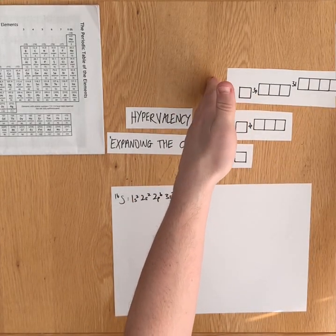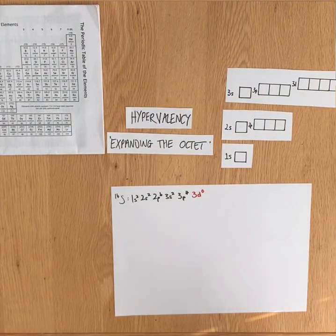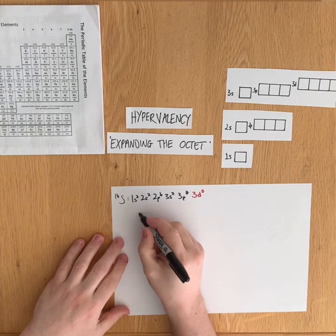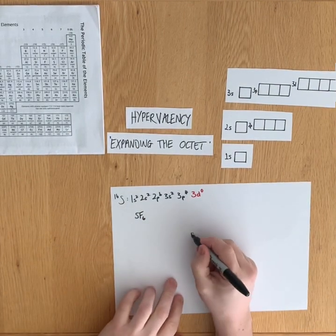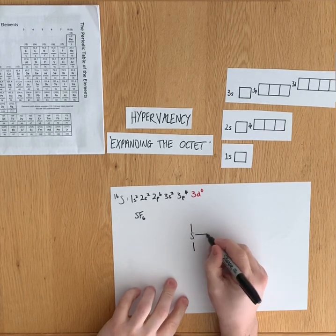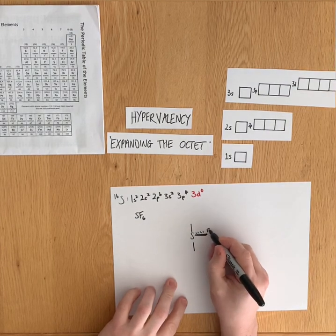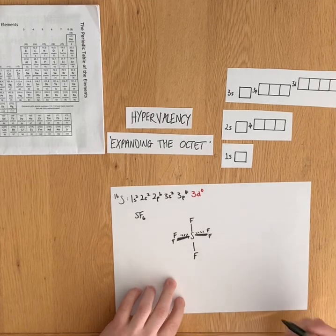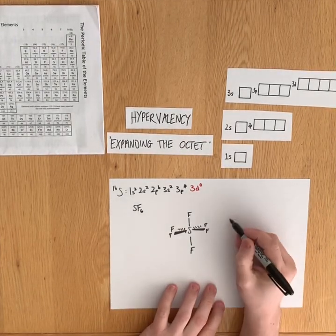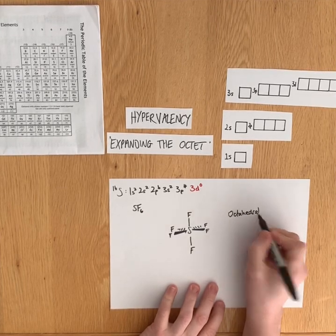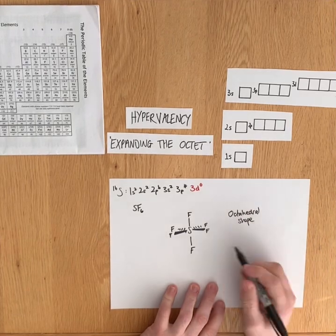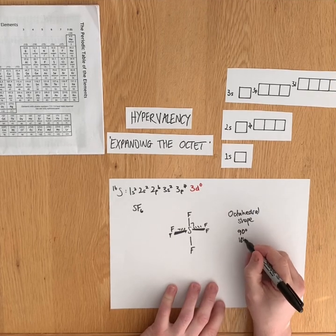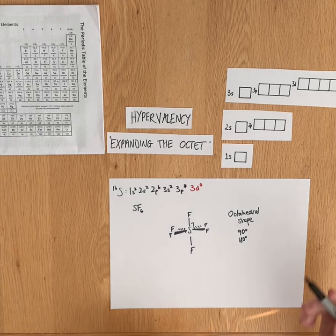SF₆ is the standard hypervalent compound that A-level sort of looks at with sulfur. Sulfur will share one of its electrons to get one back with six different fluorine atoms. Here's our octahedral molecule shape geometry, with bond angles of 90 degrees between the ones perpendicular to the plane, within the plane, and you can also say 180 degrees for any opposite bond angles.